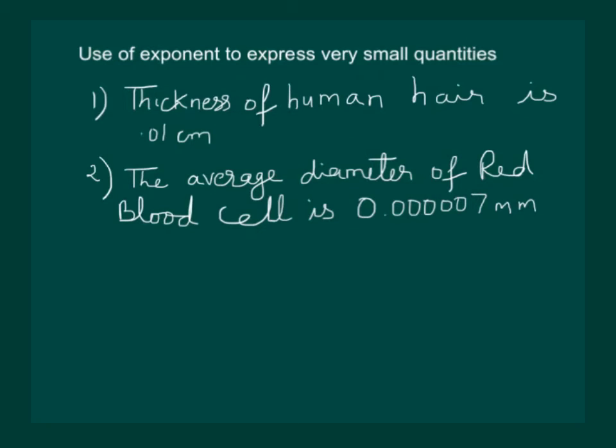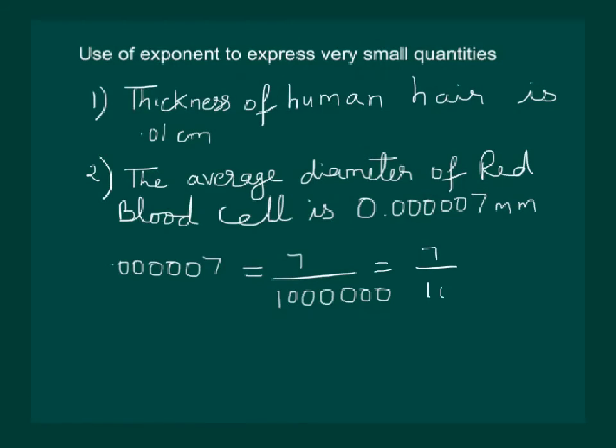Let us try to use exponent and powers to express this very small quantity and make it easy. We can write it as 7 by 10 lakh. How we have done it is, we have removed this point and counted the number of digits, 1, 2, 3, 4, 5, 6 and moved the point 6 digits so that we have 7 by 10 lakhs.